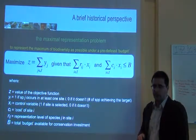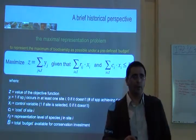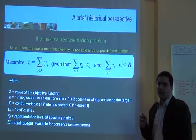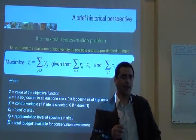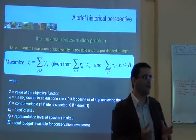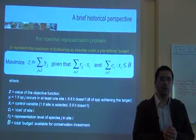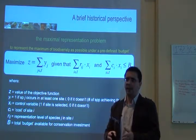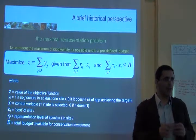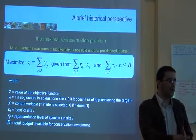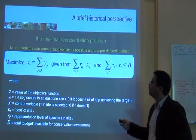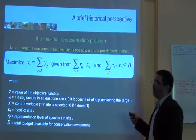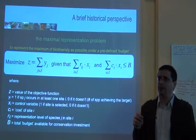The other problem, and perhaps the most common one, is called the maximal representation problem. This is a very different problem. You're not trying to find what set of areas will have the lowest cost. You have a fixed budget to invest in conservation — a fixed budget to allocating conservation actions.